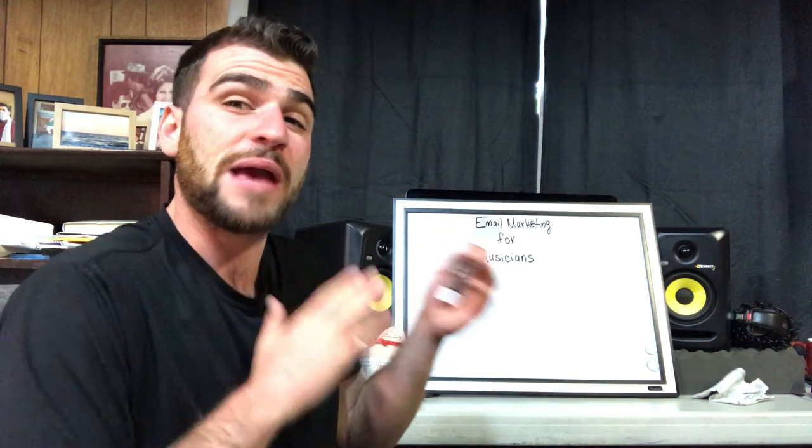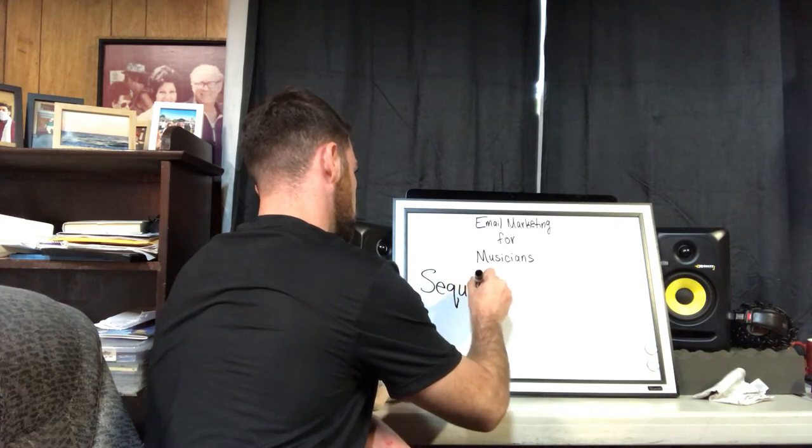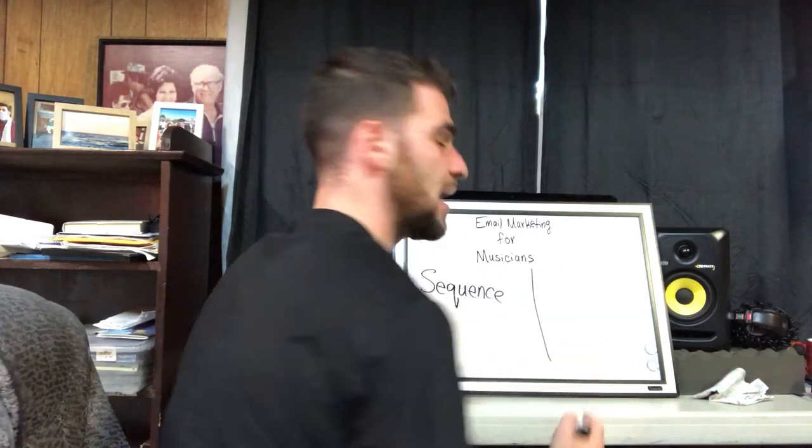There are different email providers you can use — like MailChimp, Aweber, or Constant Contact. I use Aweber personally. Setting up an account is simple enough that you can find tutorials easily. More importantly, there are different types of email campaigns. You can break them into two types: sequences and broadcasts.